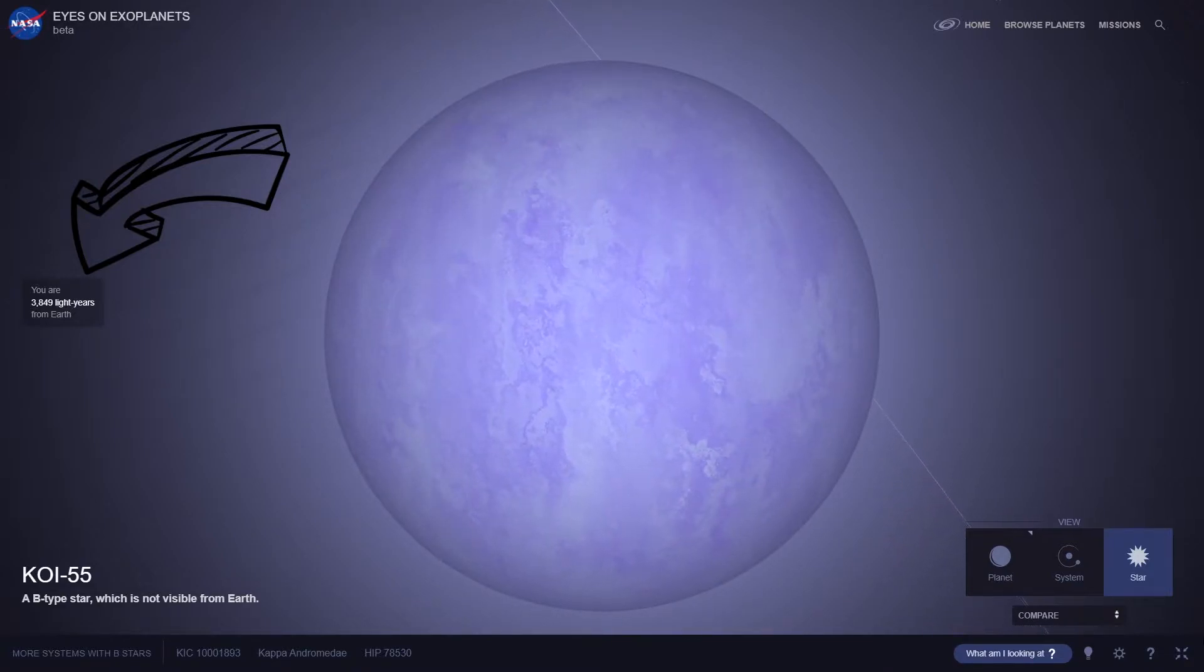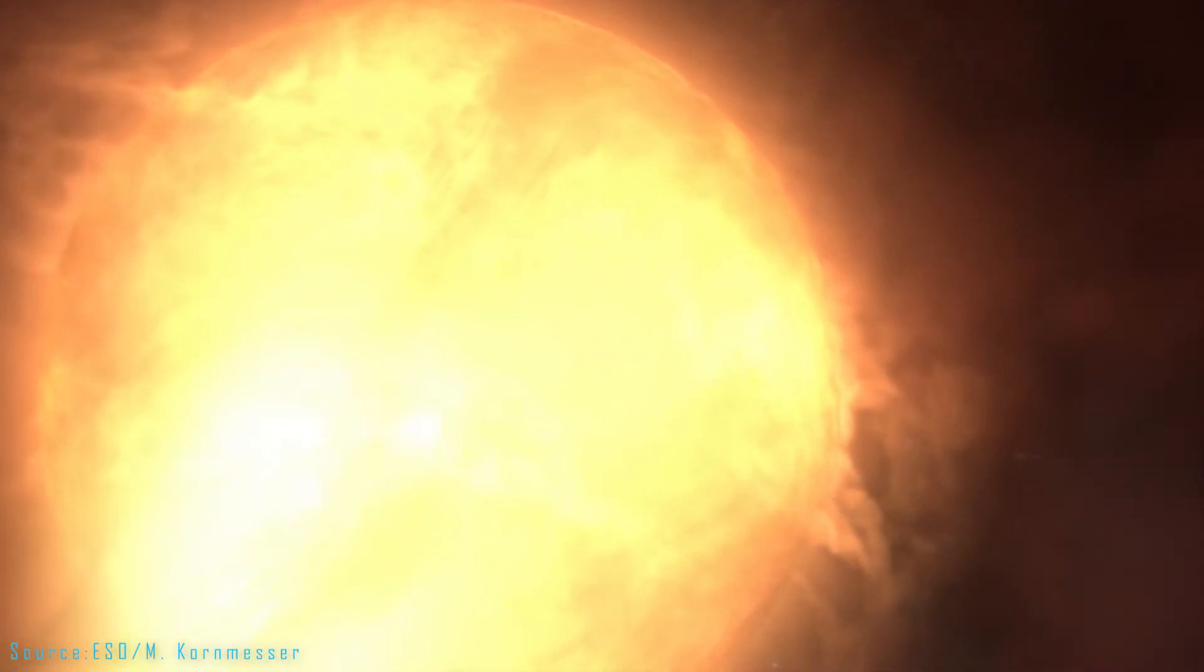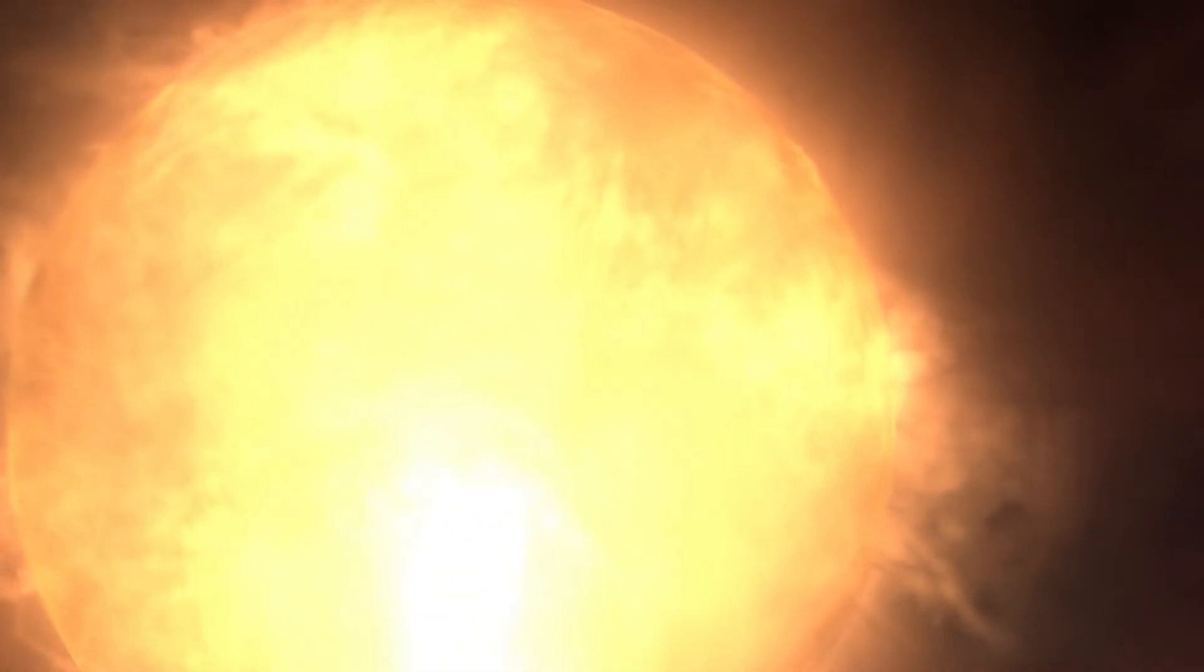But around 18.4 million years ago it went through a phase called the red giant phase. So what is this red giant phase? Perhaps that's a topic for another video, but for now all we need to know is that during this phase a star can expand its size to over 100 times temporarily.